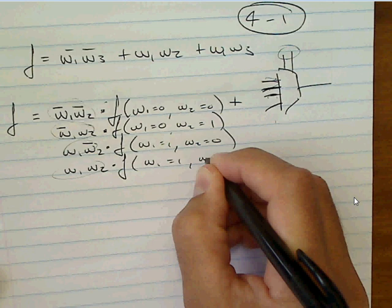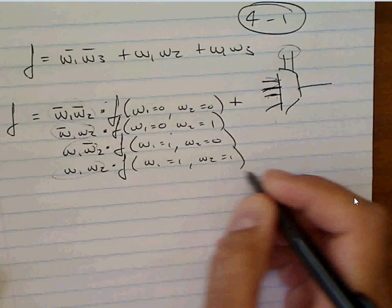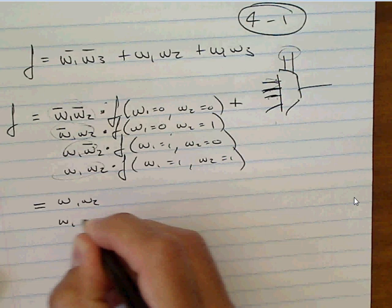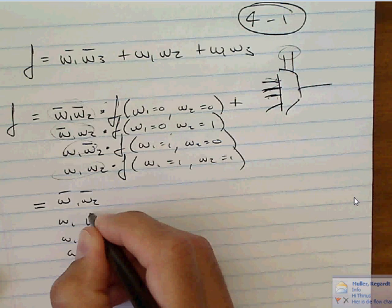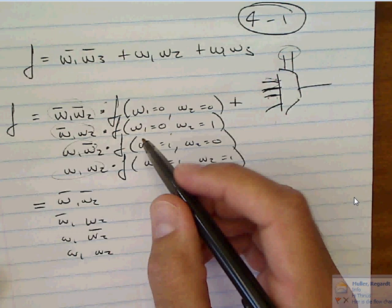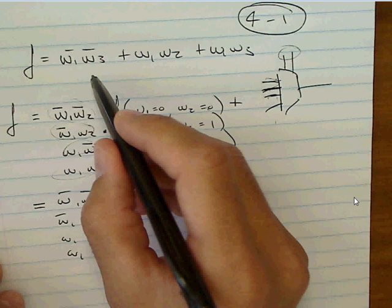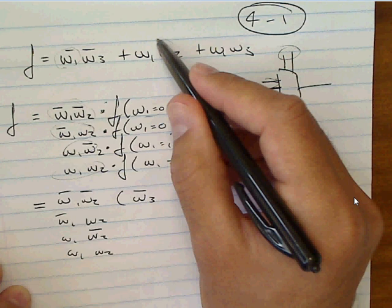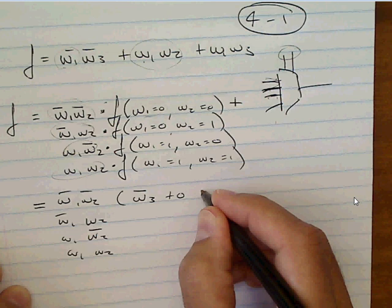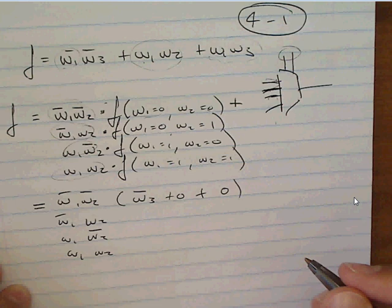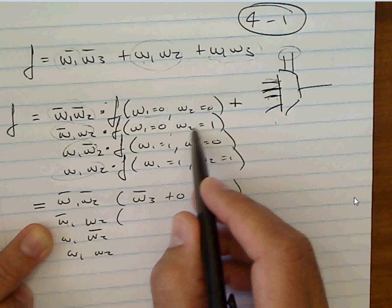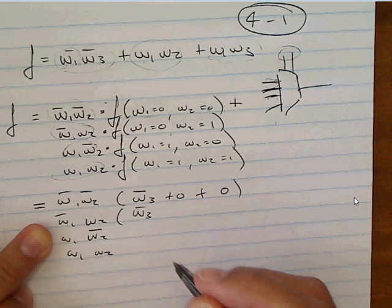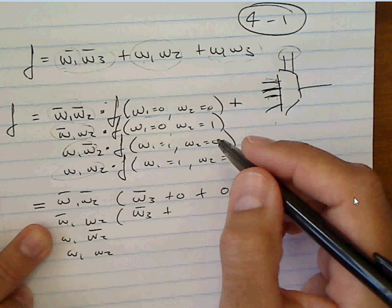Substituting W1=0 and W2=0 into F = NOT W1·NOT W3 + W1·W2 + W1·W3: the first term gives 1·NOT W3 = NOT W3; the second gives 0·0 = 0; the third gives 0·W3 = 0. So F(0,0) = NOT W3. For W1=0 and W2=1: the first term again gives NOT W3; the W1·W2 term gives 0·1 = 0; and the W1·W3 term gives 0·W3 = 0. So F(0,1) = NOT W3.